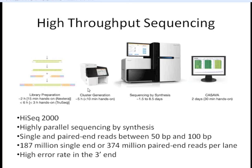All three of these machines allow for highly parallel sequencing by synthesis. You can do single or paired-end reads that are between 50 and 100 base pairs. From one lane of the HiSeq 2000, you get between 187 million and 374 million reads, depending on whether you're using single or paired end. An important thing to note, however, is that there's a high error rate towards the 3-prime end of these reads.